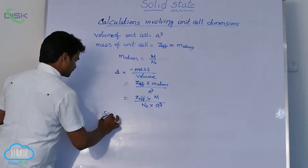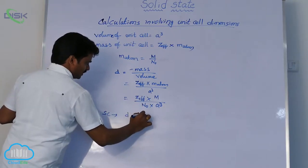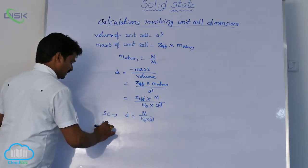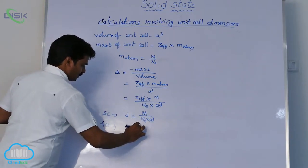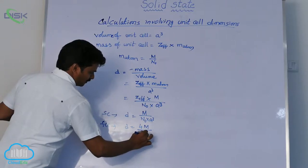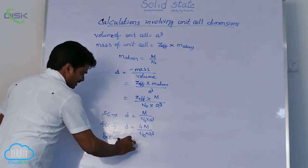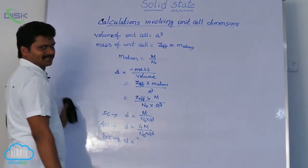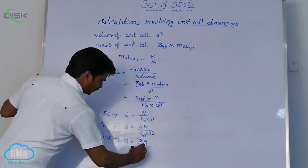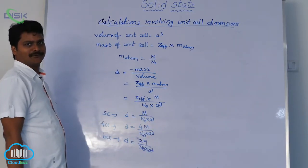For a simple cubic system, Z_eff = 1, so density = M / (N₀ × A³). For FCC, Z_eff = 4, so density = 4M / (N₀ × A³). For BCC, Z_eff = 2, so density = 2M / (N₀ × A³). These formulas can be used directly to find the density of a unit cell.